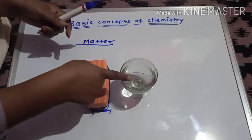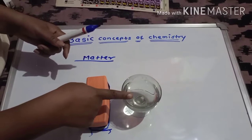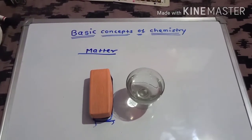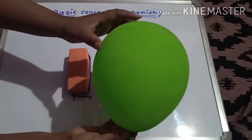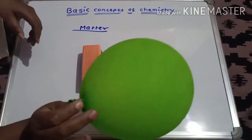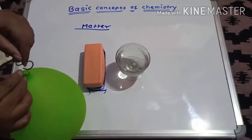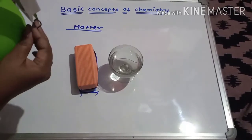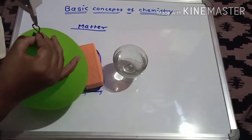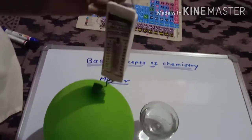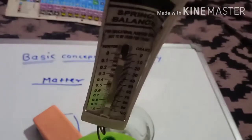Similarly, this water also has a particular mass — say 20 ml, 30 ml, 40 ml — and it also occupies the space of this container. Similarly, the balloon which is filled with air has a particular mass. Air we cannot see, but with the help of a simple experiment, it is clarified that air also has a particular mass and can occupy space. The balloon has a mass of 10 grams and air occupies the space of this balloon.